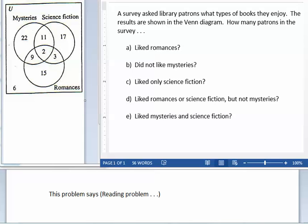This problem says a survey asked library patrons what types of books they enjoy. The results are shown in the Venn diagram. How many patrons in the survey liked romances?